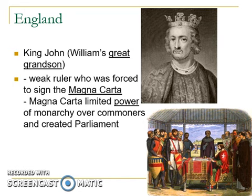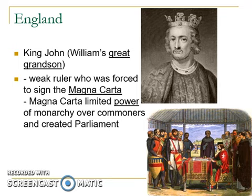The Magna Carta limited the power of the monarchy over commoners and created parliament. On June 15, 1215, the Magna Carta was signed, guaranteeing basic political rights for the people and limiting the king's power. The people were fighting back against King John and he could not control them. The Magna Carta guaranteed rights including no taxation without representation, trial by jury, and protection of the law.